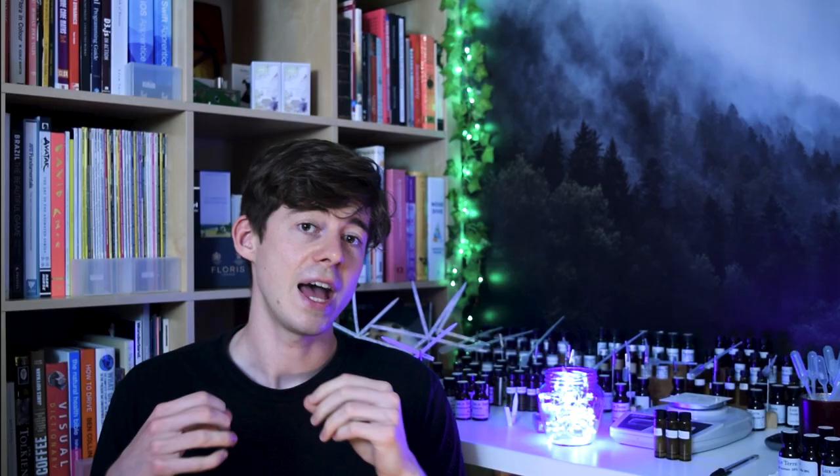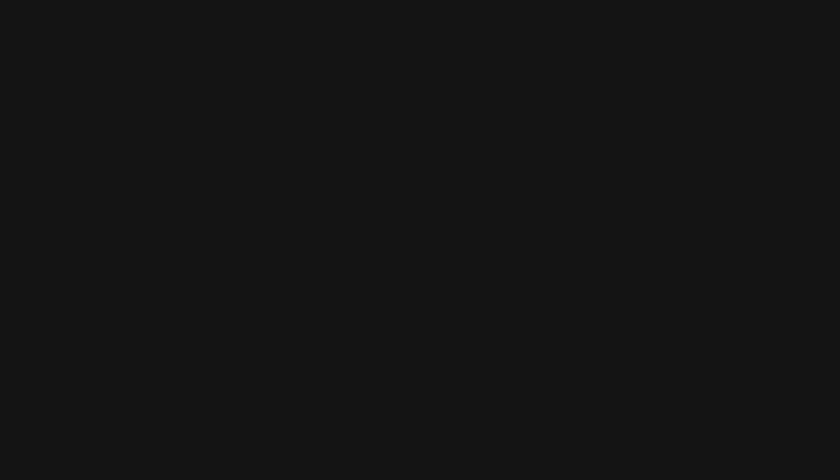The story begins with the first generation of musks — the nitro musks. These were widely used and cost effective, but now they're banned in most countries except a few like India and China. They were actually discovered by accident: in 1888, a chemist called Albert Bauer was looking for alternatives to TNT and accidentally came across a molecule which smelled musky. This was called musk ketone. After that came musk xylene, which was prohibited by the IFRA because it's actually classed as an explosive.